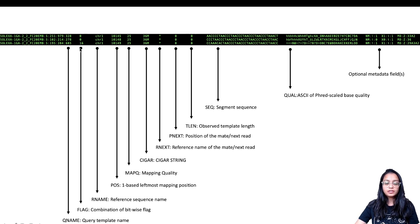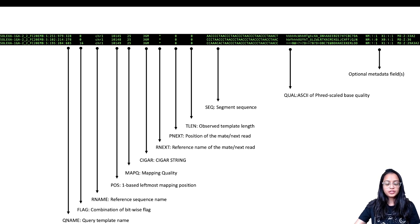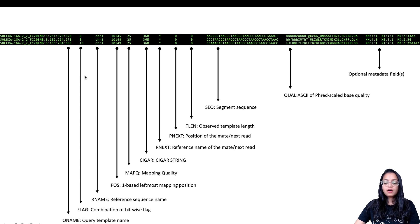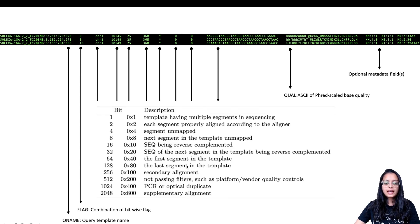The field we are going to focus on today is the second field: the SAM flag. The SAM flag is a combination of a bitwise flag which corresponds to various features and gives us information about a read — whether it is mapped, unmapped, a PCR duplicate, or many other features.